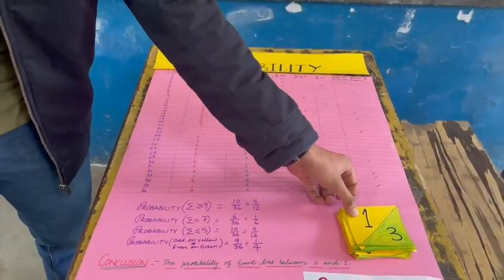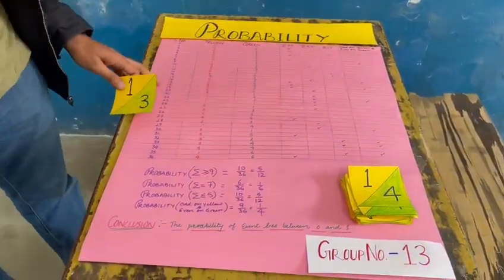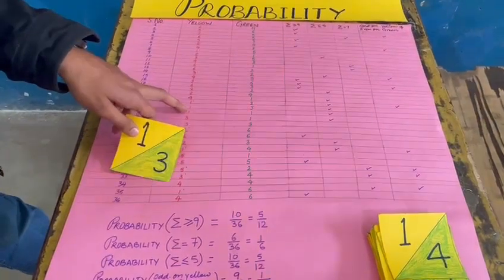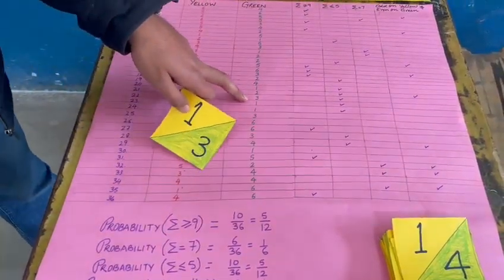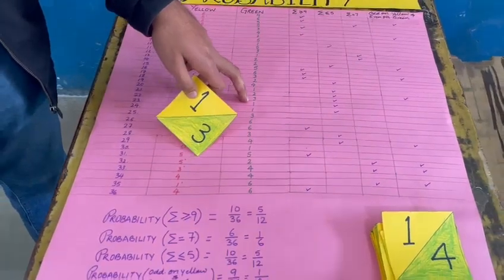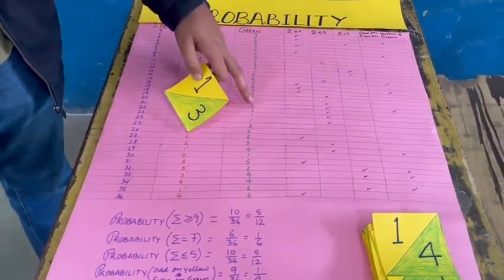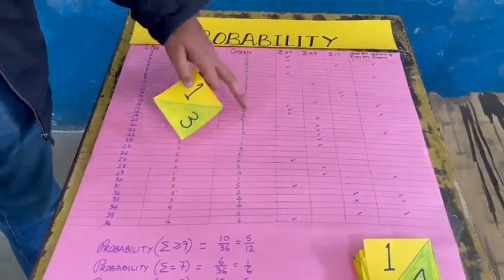For example, we have taken this one outcome 1 and 3. So we will see where it lies. It lies here. On the first dice it says 1 and on the second dice it says 3. And we will check if the sum of these two is greater than or equal to 9, which is not.